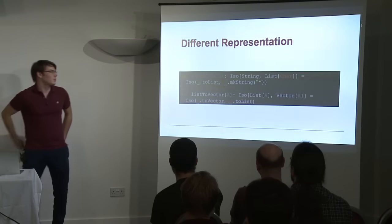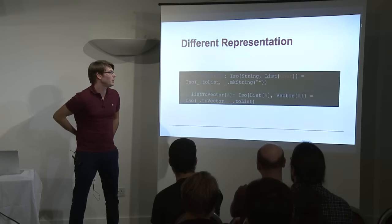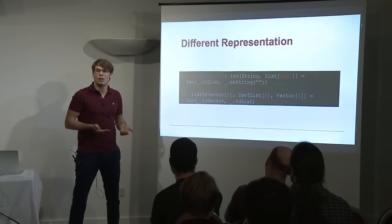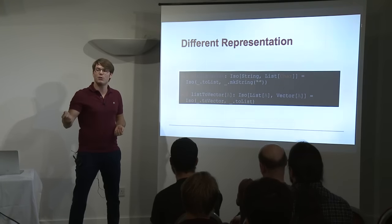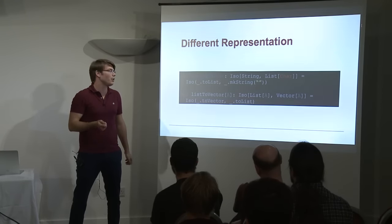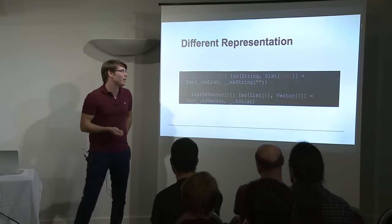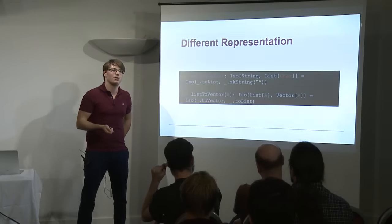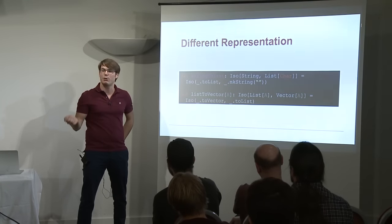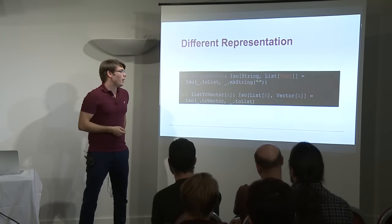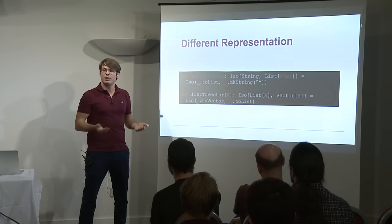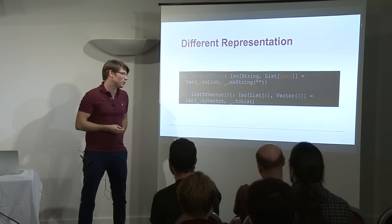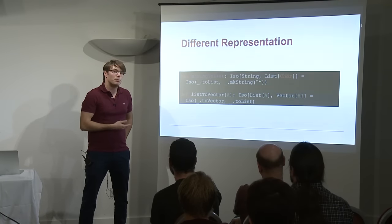Other ISO examples: we could imagine an ISO between String and List of Characters, because they are exactly the same thing — just a sequence of characters. What's nice with an ISO is that it's documentation by itself: when you see an ISO between two types, you know these two things are equivalent. Same between List and Vector — they are just two sequences, one more efficient than the other for some functions, but potentially they are equivalent.